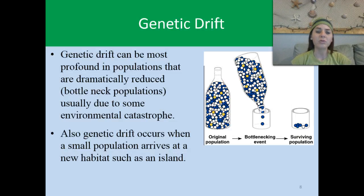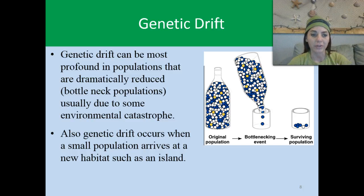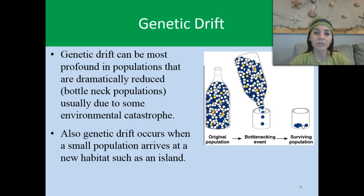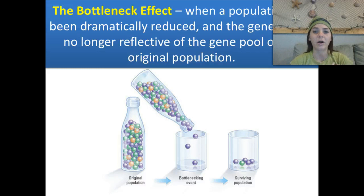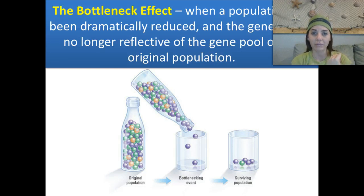Genetic drift can be most profound in populations that are dramatically reduced, like a bottleneck population, usually due to some type of environmental catastrophe — and sometimes we're the cause of that. Genetic drift also occurs when a small population arrives at a new habitat, such as an island, like colonizing something. The first type we'll discuss is the bottleneck effect, and the second is called the founder effect. Make sure you can differentiate between the two and give an example of each.